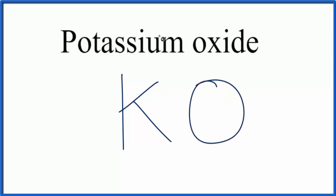And because we have a metal here, the potassium, and a non-metal, the oxygen, we have an ionic compound.